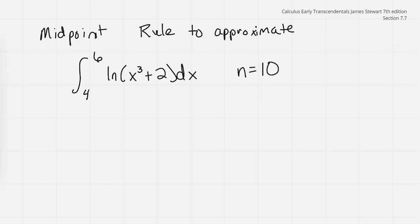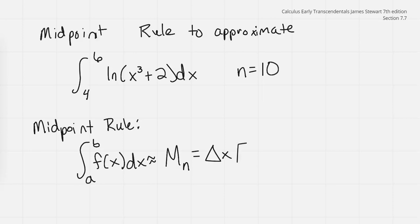The midpoint rule - let's write that down. This is a very good habit to get into so we can see how it goes from the general rule to the specific problem. We have the integral from a to b of f of x dx is approximately equal to M sub n, which equals delta x times bracket of f of x bar sub 1 plus f of x bar sub 2 plus dot dot dot plus f of x bar sub n.